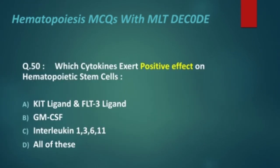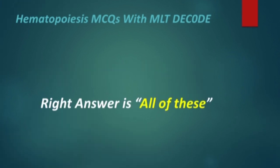Next, MCQ 49: Which cytokine exerts a positive effect on hematopoietic stem cells? Options are: kit ligand and FLT ligand, GM colony-stimulating factor, interleukin-1, 3, 6, and 11, and all of these. The right answer is all of these.